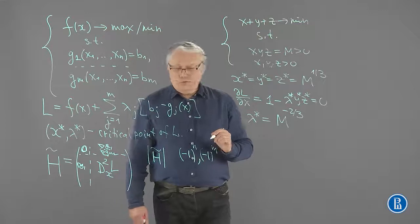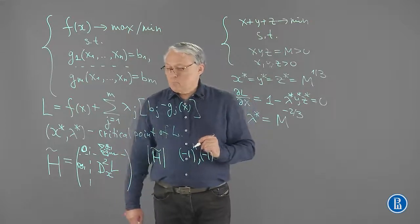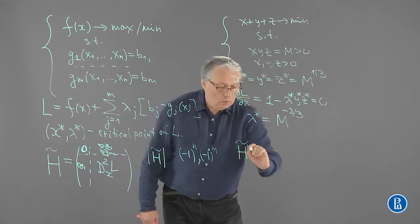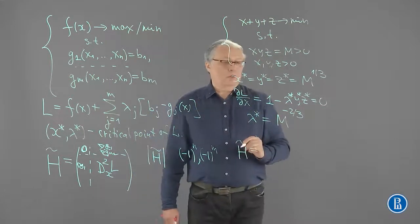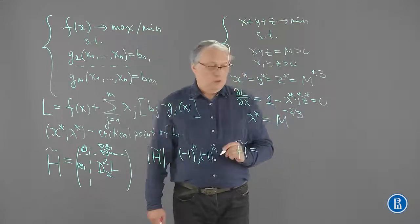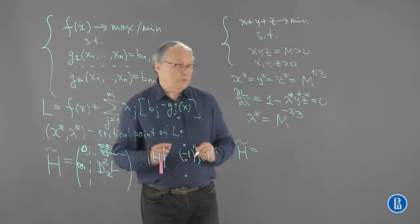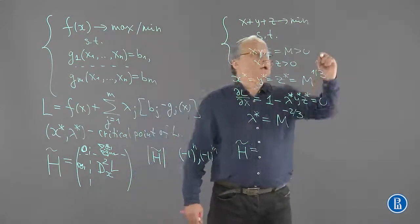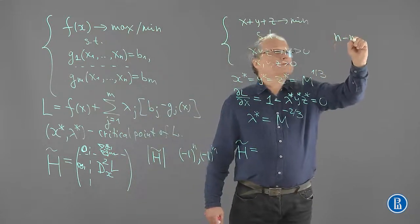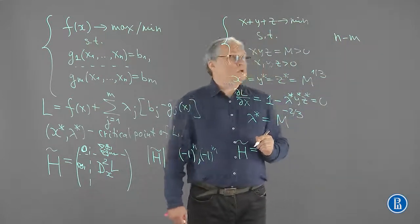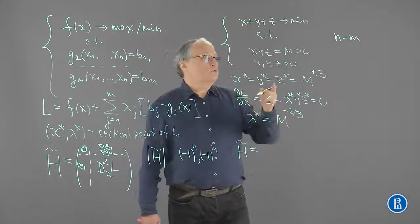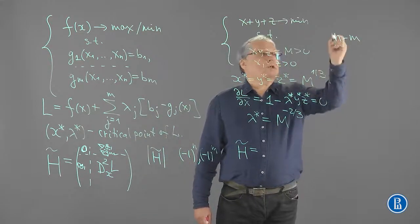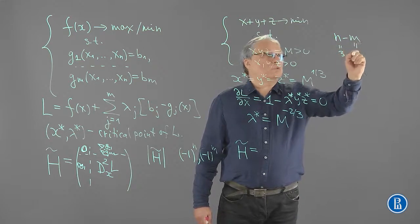And we are ready to fill in the Hessian matrix. In this particular case, that will be a 4x4 matrix. According to the theorem, we need to calculate the signs of n minus m leading principal minors, starting with the biggest. So that gives us two values, because n is 3 and m is 1. We need to find two determinants only.